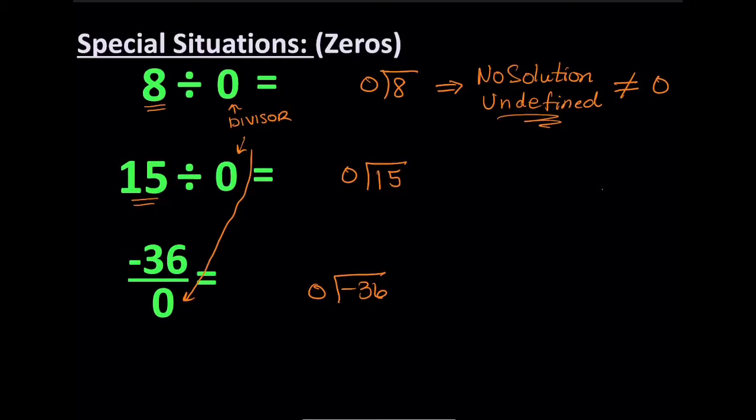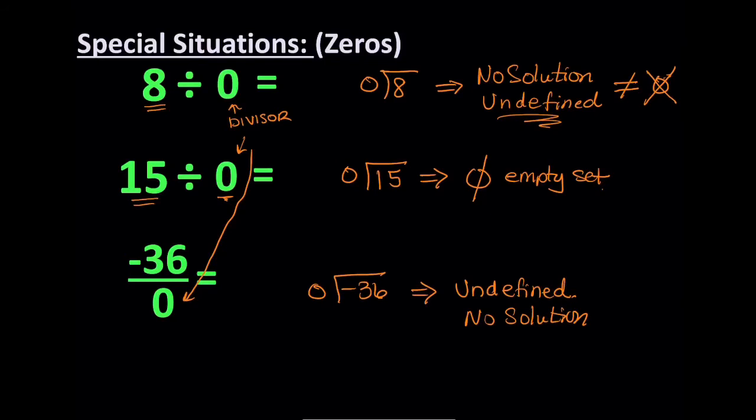Some people say, well, isn't zero no solution? No, zero is actually a solution. Like I said, you can have zero dollars in your bank account. You can score zero points in a game, but you cannot divide by zero. That is not the same thing. So when you divide by zero, when the divisor is zero, you have to write no solution. Another way to write that is as a null set or empty set. You can sometimes write that symbol. But every time you divide by zero, it is always going to be undefined or no solution. Like I said, don't confuse that with zero. Zero is not the same thing as no solution. Zero is an actual solution. It's an actual number. It's a whole number.